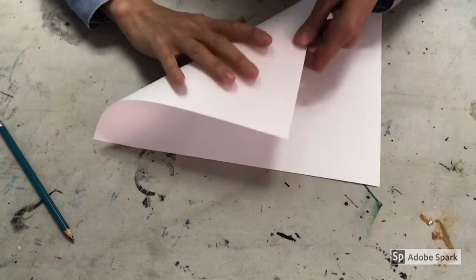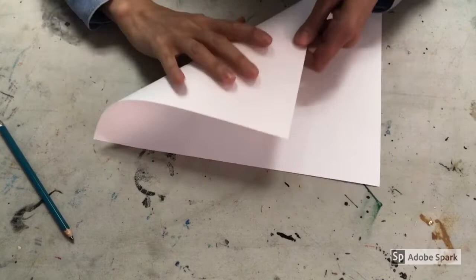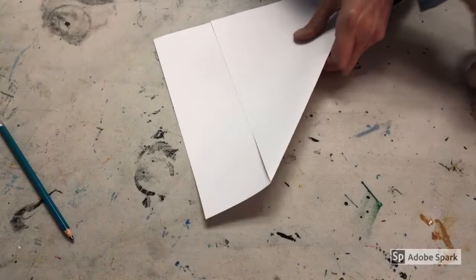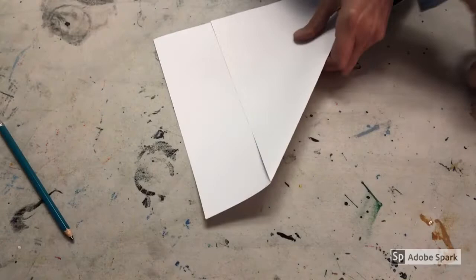To start we need to turn our rectangular paper into a square. We're going to go from one corner and fold it directly across to the opposite edge like this, making sure it's lined up perfectly. Press down and slide our finger across with a nice sharp fold, and then we're going to cut off this extra tail with a pair of scissors. Be really careful when you do this so you get a nice straight line.